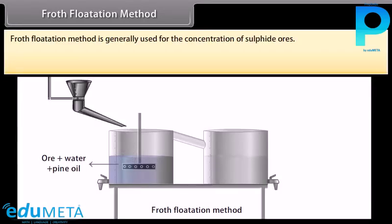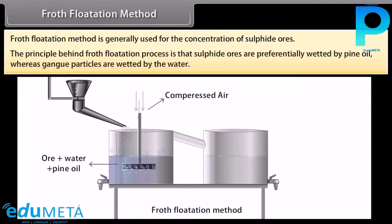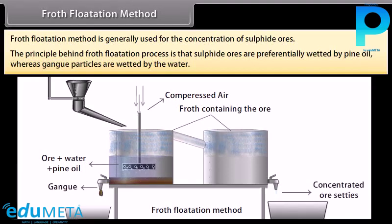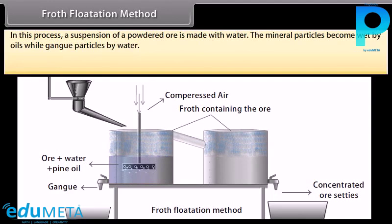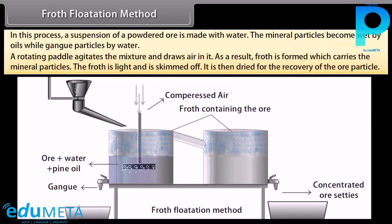Froth flotation is generally used for the concentration of sulphide ores. The principle is that sulphide ores are preferentially wetted by pine oil whereas gang particles are wetted by water. A suspension of powdered ore is made with water; collectors like pine oil, fatty acids, and xanthates are added. Froth stabilizers like cresols and aniline stabilize the froth. A rotating paddle agitates the mixture, drawing in air and forming froth which carries the mineral particles. The froth is skimmed off and dried for recovery of ore particles.